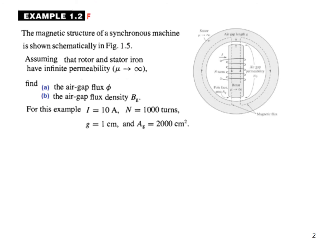The question here is that the magnetic structure of a synchronous machine is shown here. This is the synchronous machine. Assume that the rotor and stator irons have infinite permeability, so μ is infinity, and we have to find the air gap flux φ and the air gap flux density Bg.